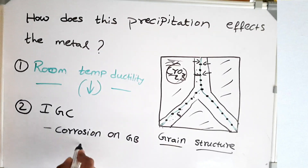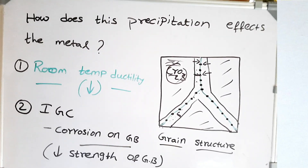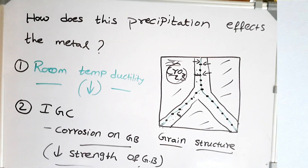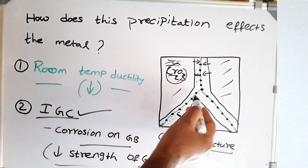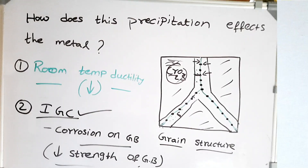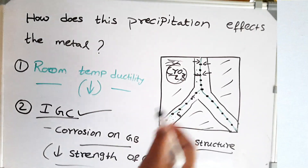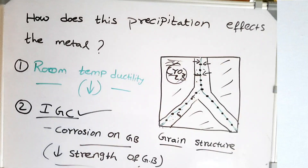Corrosion occurs at the grain boundary, which decreases the strength of the grain boundary and leads to disintegration of the material along the grain boundaries. This is called intergranular corrosion because it is happening between the grains at the grain boundary. This is just like pitting corrosion — highly localized corrosion — occurring only along the grain boundary regions from which chromium got depleted.